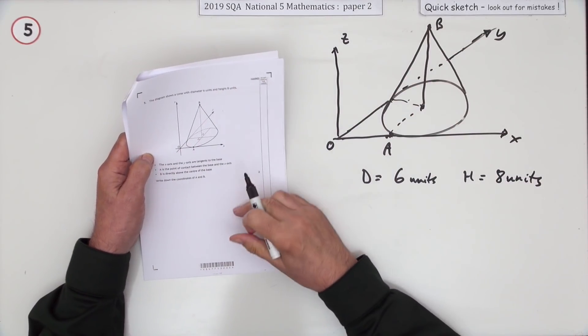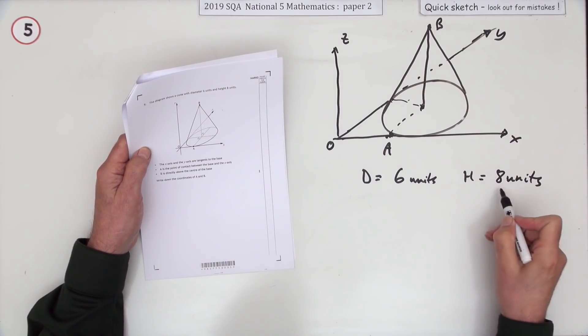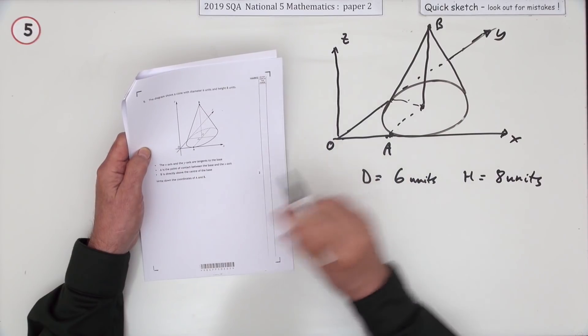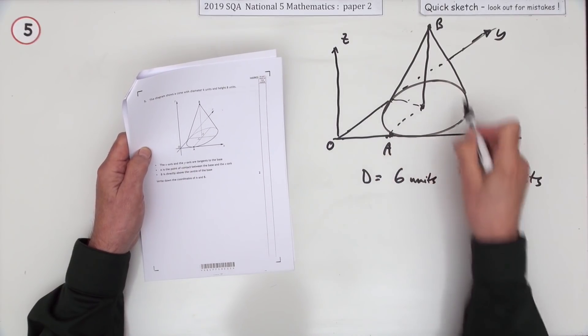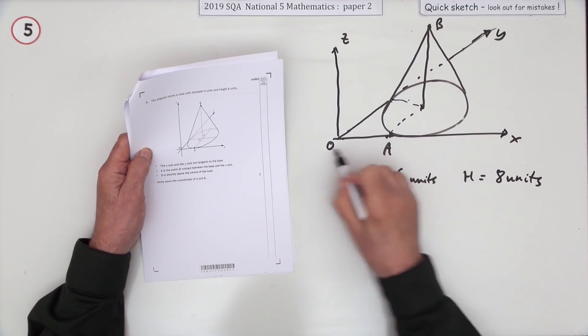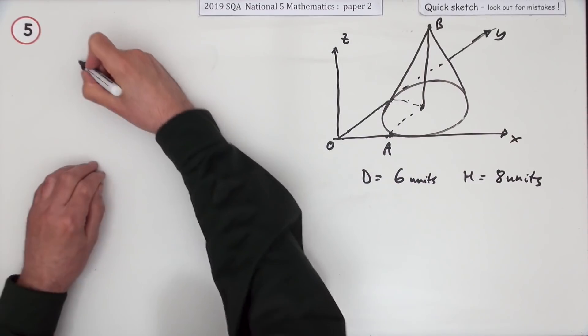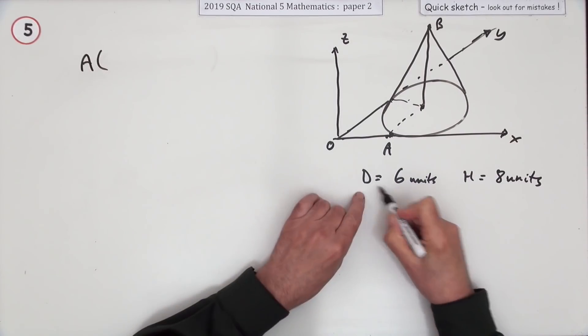It gives you its dimensions: the diameter is six and the height is eight. That being the case, and also the fact that that circular base is tucked up against those two axes, so those axes are tangents to it, what are the coordinates of A and B?